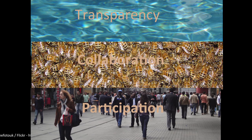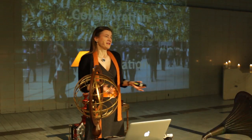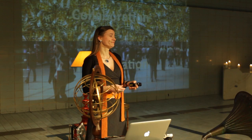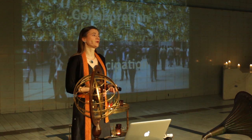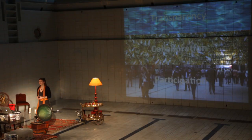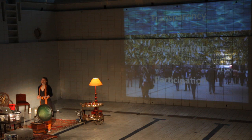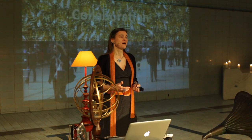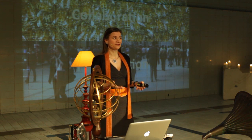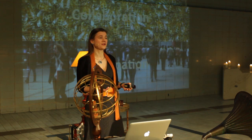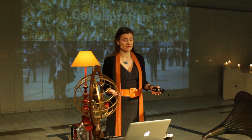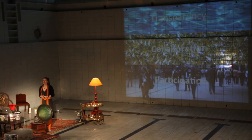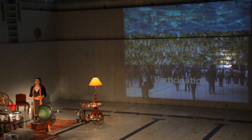Now let's deep dive into open government. A bit of theory is probably necessary. Open government is based on three pillars: transparency, collaboration, and participation. With transparency we mean open data — all data in the hands of our government being published so that everybody can use it for whatever purpose they want, free of charge. This makes sense because it has been collected with taxpayers' money anyway.